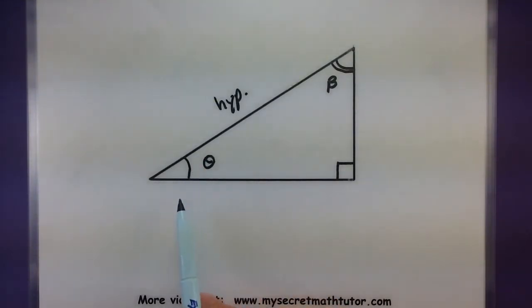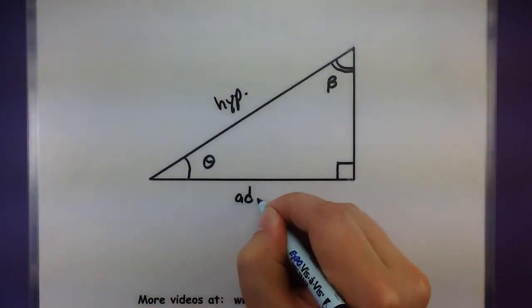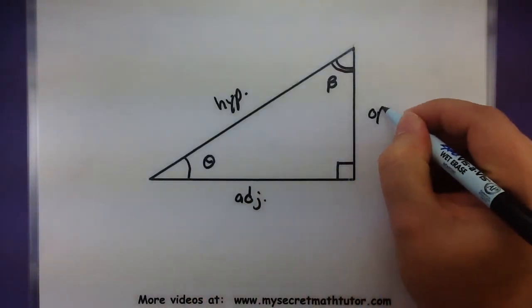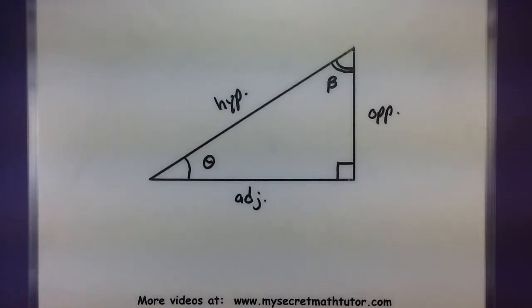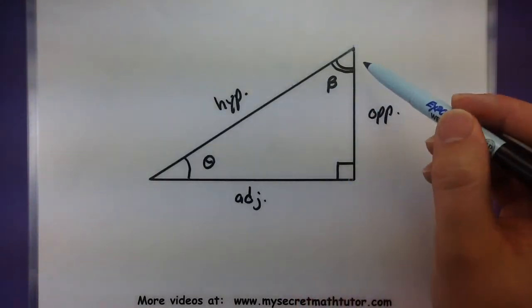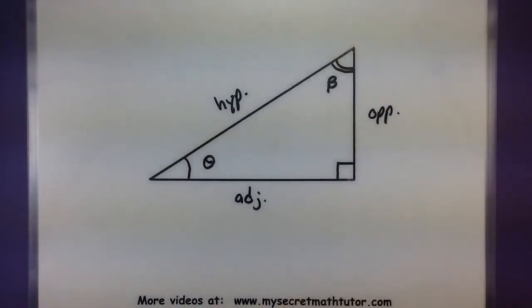So, if this is the angle I'm talking about, this side right next to it would be the adjacent side. And the side right across from it would be the opposite side. Now, of course, that could change if I'm talking about this angle, then this guy would become the adjacent side and this one would be the opposite. So, it really matters what angle you're talking about.